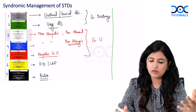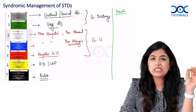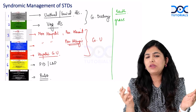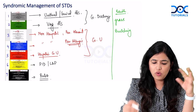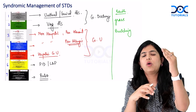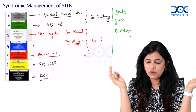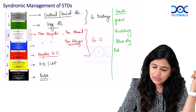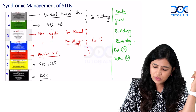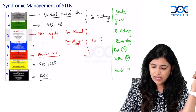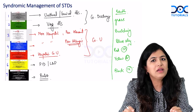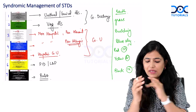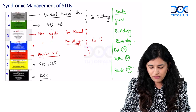Here is a mnemonic to remember the kit colours: Earth is grey at the center — grey kit. On the surface of the earth you have green grass — green kit. On the green grass there is a white building — white kit. When you stand on that building you see blue sky — blue kit. The sky is red in the morning — red kit, yellow in the afternoon — yellow kit, and black in the night — black kit.